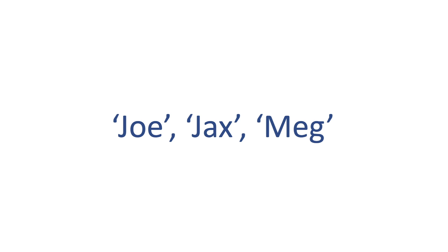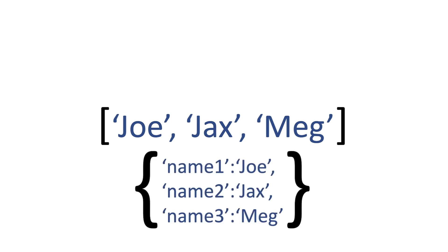We're going to start with an array of Joe, Jacks and Meg. We're also going to create an object of name one, name two, name three of Joe, Jacks and Meg. And Jacks and Meg are my cats, if you're wondering who these are.